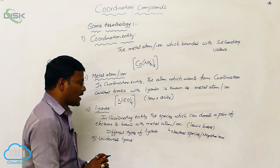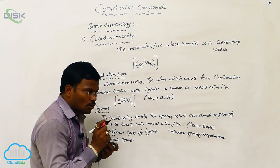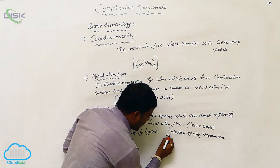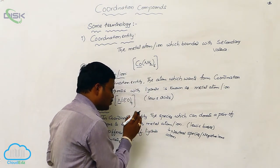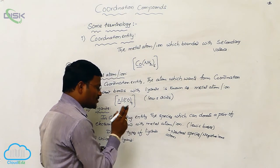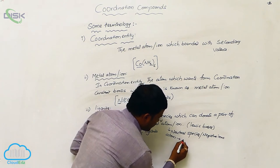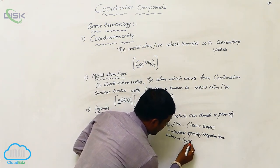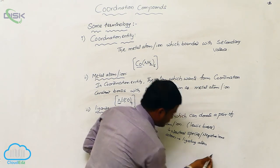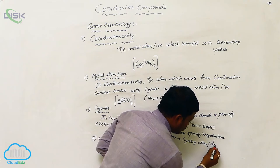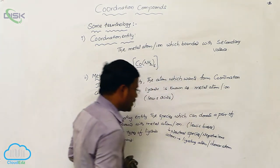In a neutral species or negative ions, in this molecule, whatever atom wants to donate a non-bonding pair of electrons to make a coordination covalent bond with metal atoms is called the ligating atom. The ligating atom is also called the donor atom.